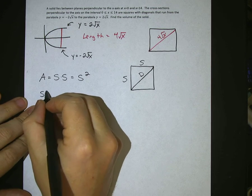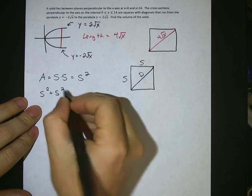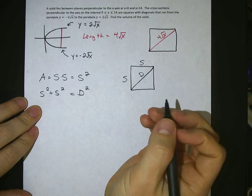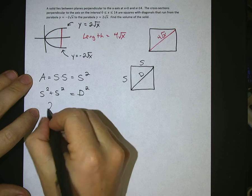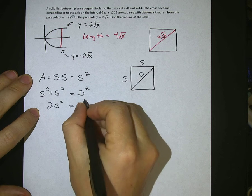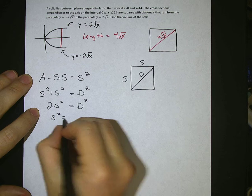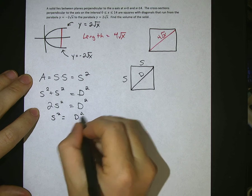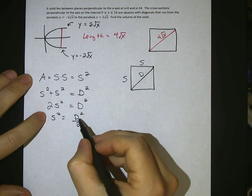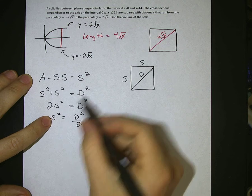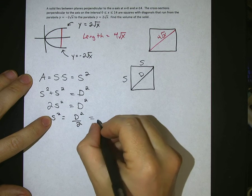we can say that s squared plus s squared equals d squared. And then that would give us 2s squared equal to d squared, or s squared is equal to d squared over 2. Notice that s squared is equal to d squared over 2, and s squared is also equal to the area. So this is equal to the area, A.